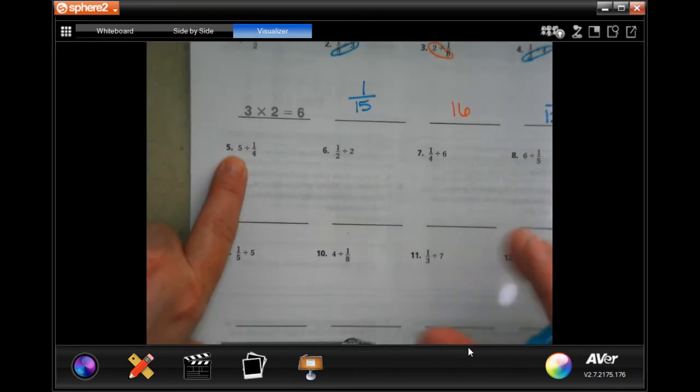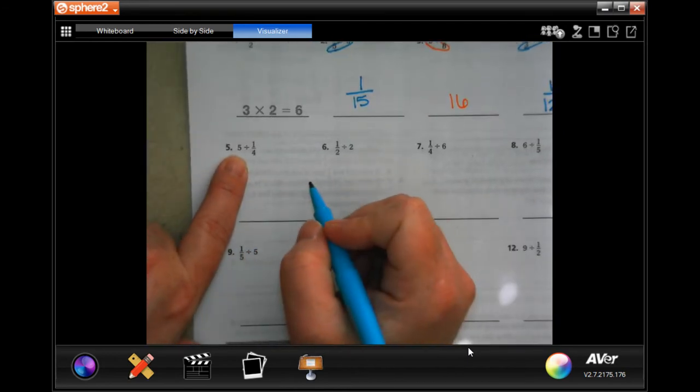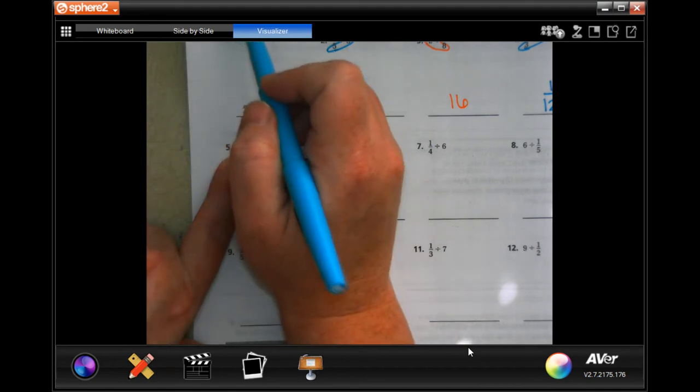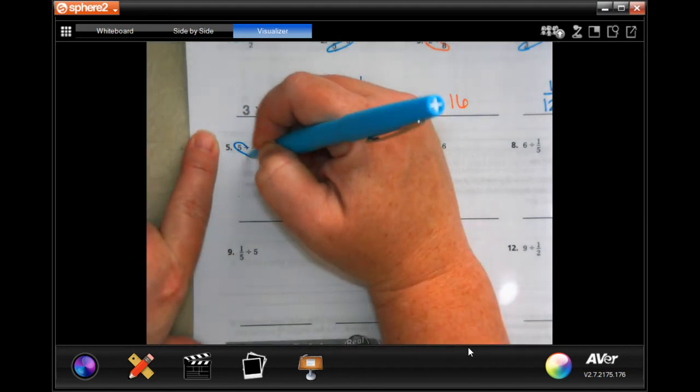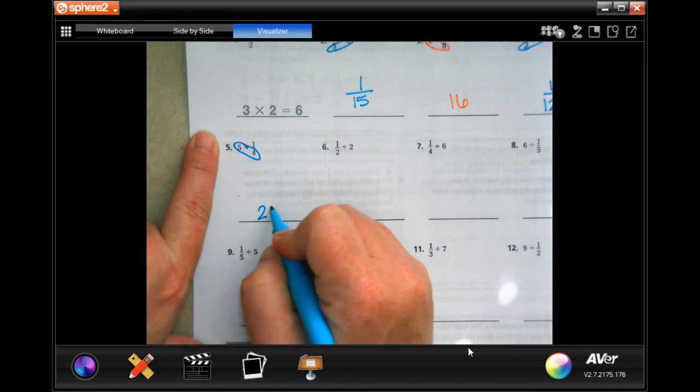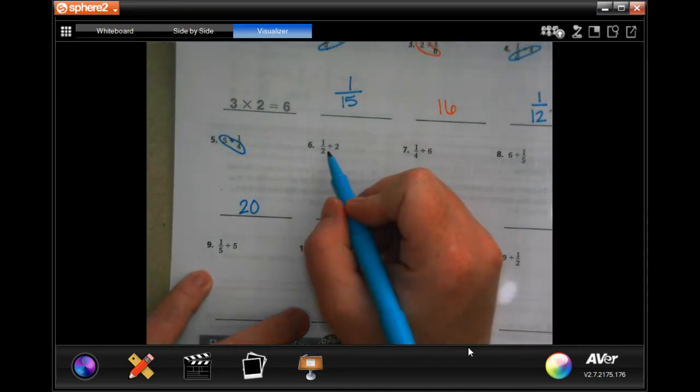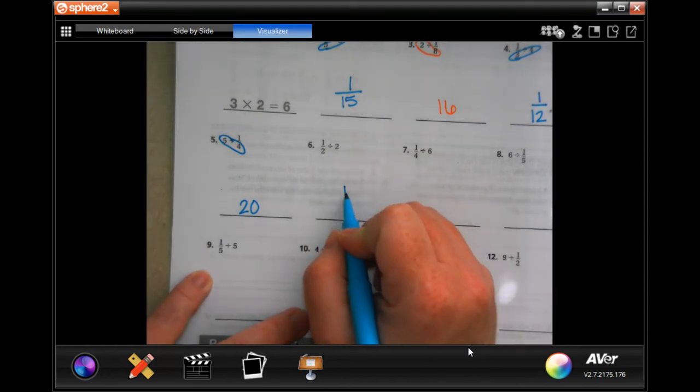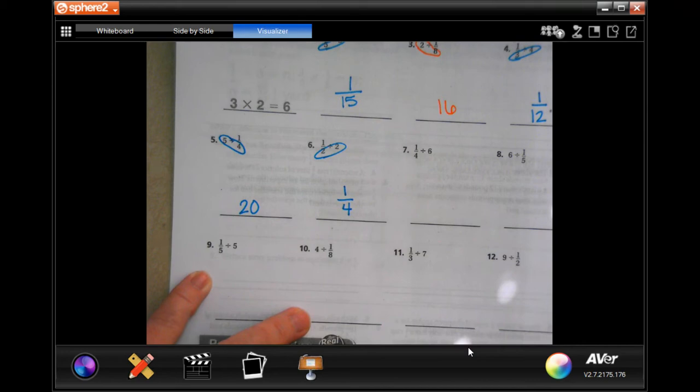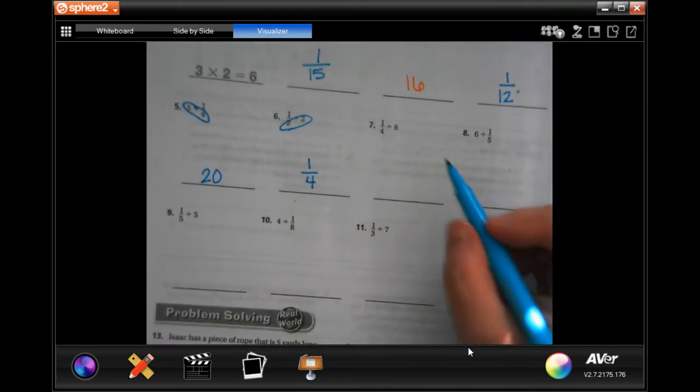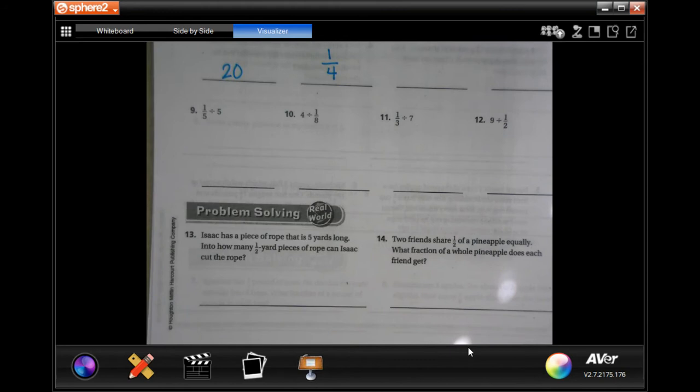Then, whole number divided by a fraction, and we're going to multiply and get 20. Fraction by a whole number, done. You guys do 7 through 12, you totally can, I believe in you.